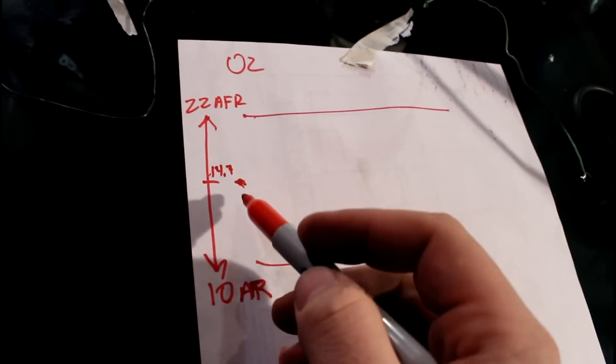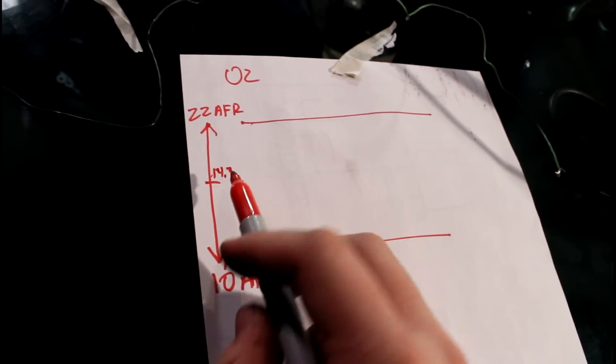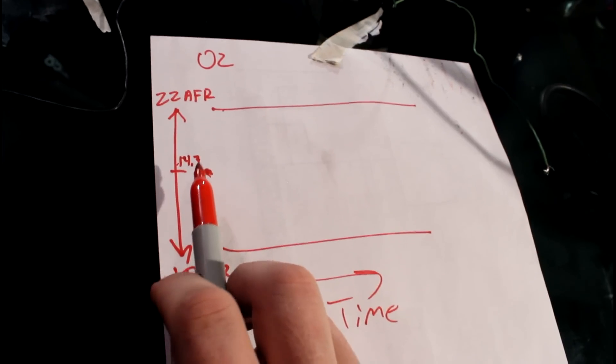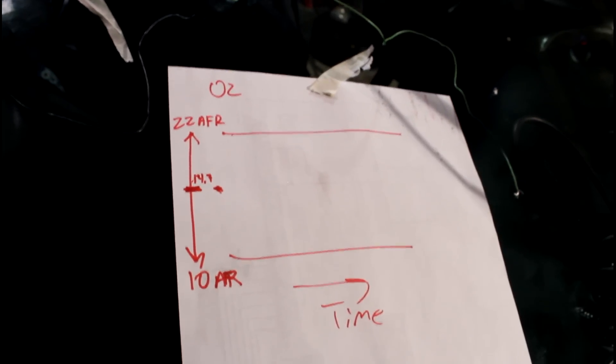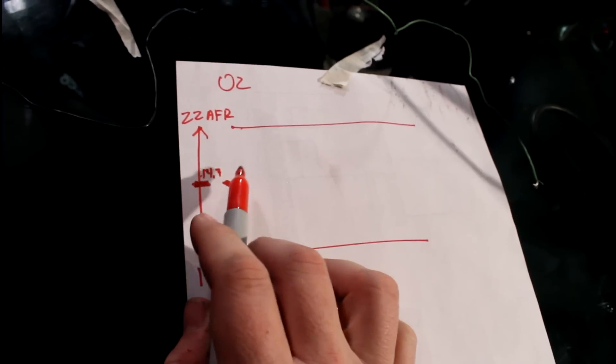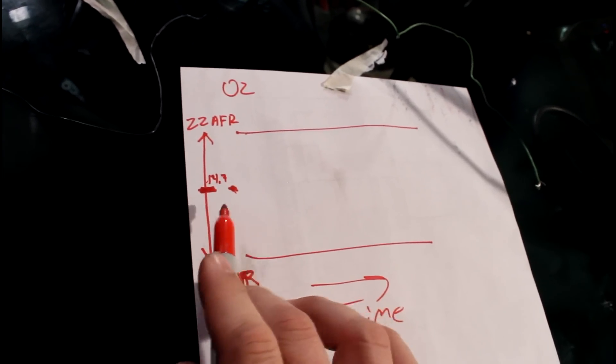We have gasoline motor. So that's going to be the stoichiometric or some people call it stoich ratio for gasoline here. So you need 14.7 parts of air per one part of gasoline or fuel.